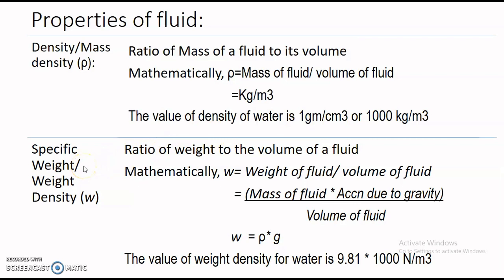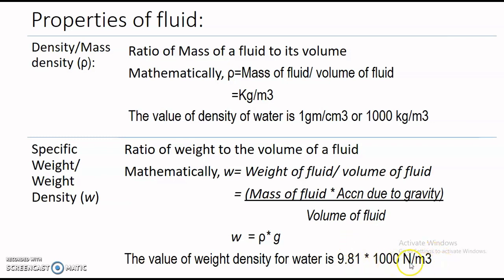The next property is specific weight, also called weight density, denoted by the letter w. Specific weight is the ratio of weight to the volume of a fluid. Mathematically, w = weight of fluid / volume of fluid = mg / V = (m/V) × g = ρg, where ρ is density and g is acceleration due to gravity. The standard value of weight density for water is 9.81 × 1000 = 9810 Newton per meter cube.